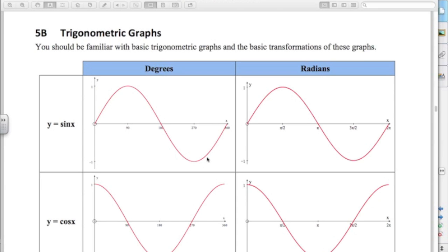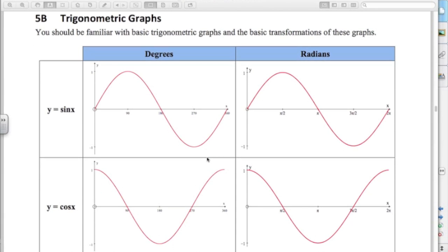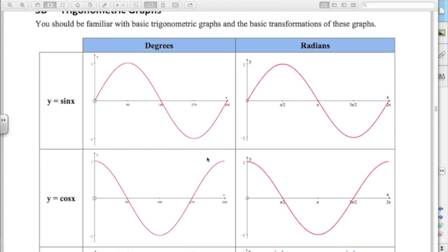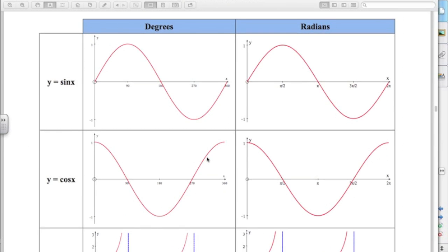Sine, cosine and tan are graphs that you probably would have seen in previous years. You need to know the basic shape of what they look like, where they go through the axes, etc. You also need to know for degrees and radians what the graphs look like. So I've drawn both of them here for degrees and radians. So 180 degrees is pi radians.